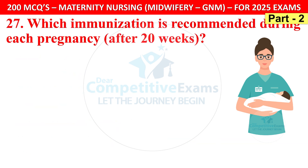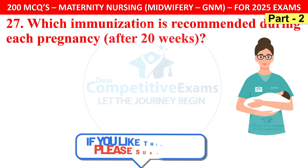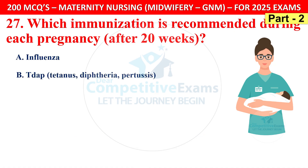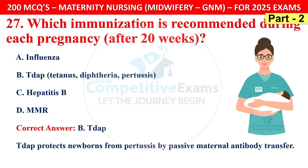Question 27: Which immunization is recommended during each pregnancy after 20 weeks? Options are Influenza, Tdap, Hepatitis B, or MMR. The correct answer is B — Tdap. Tdap protects newborns from pertussis by passive maternal antibody transfer.